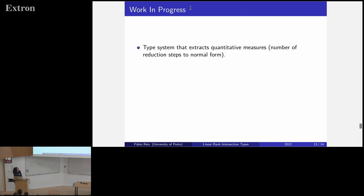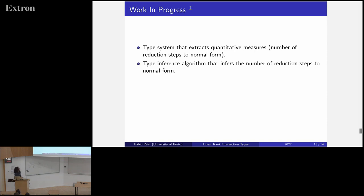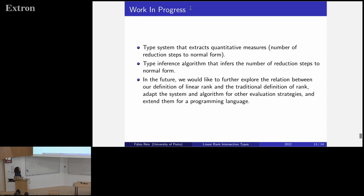We have some work in progress: we extended this type system to extract quantitative measures — specifically the number of reduction steps to normal form under the leftmost-outermost evaluation strategy. This was done by merging our system with the system by Benjamin, Stefan, and Delia from their work on typing in tight bounds. We are still proving some of its properties, and we extended the type inference algorithm to infer those numbers of steps — though we are yet to prove completeness and soundness. In the future we'd like to further explore the relation between our rank definition and the traditional one, adapt the system and algorithm for other evaluation strategies, and extend them to a simple programming language.